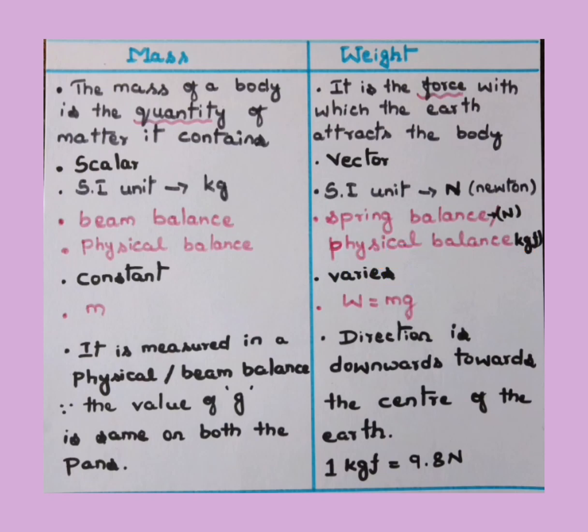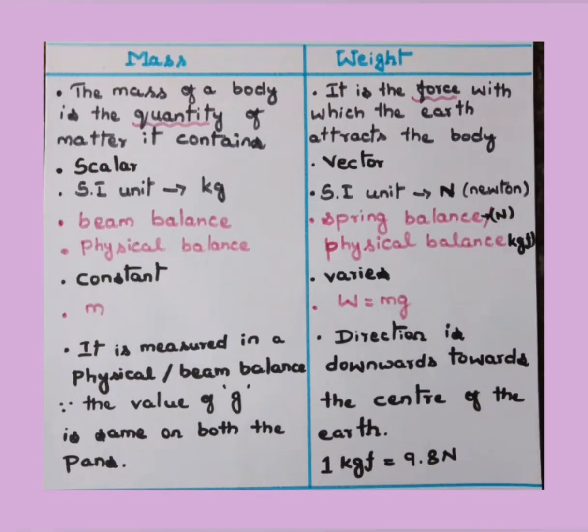Next, mass is constant when we move from place to place, but in case of weight it varies from place to place since the value of g (gravity) also varies. It affects the weight of an object, hence weight varies from place to place. In general, mass is represented by letter m, whereas the expression for weight is equal to m into g. The product of mass and gravity is called weight.